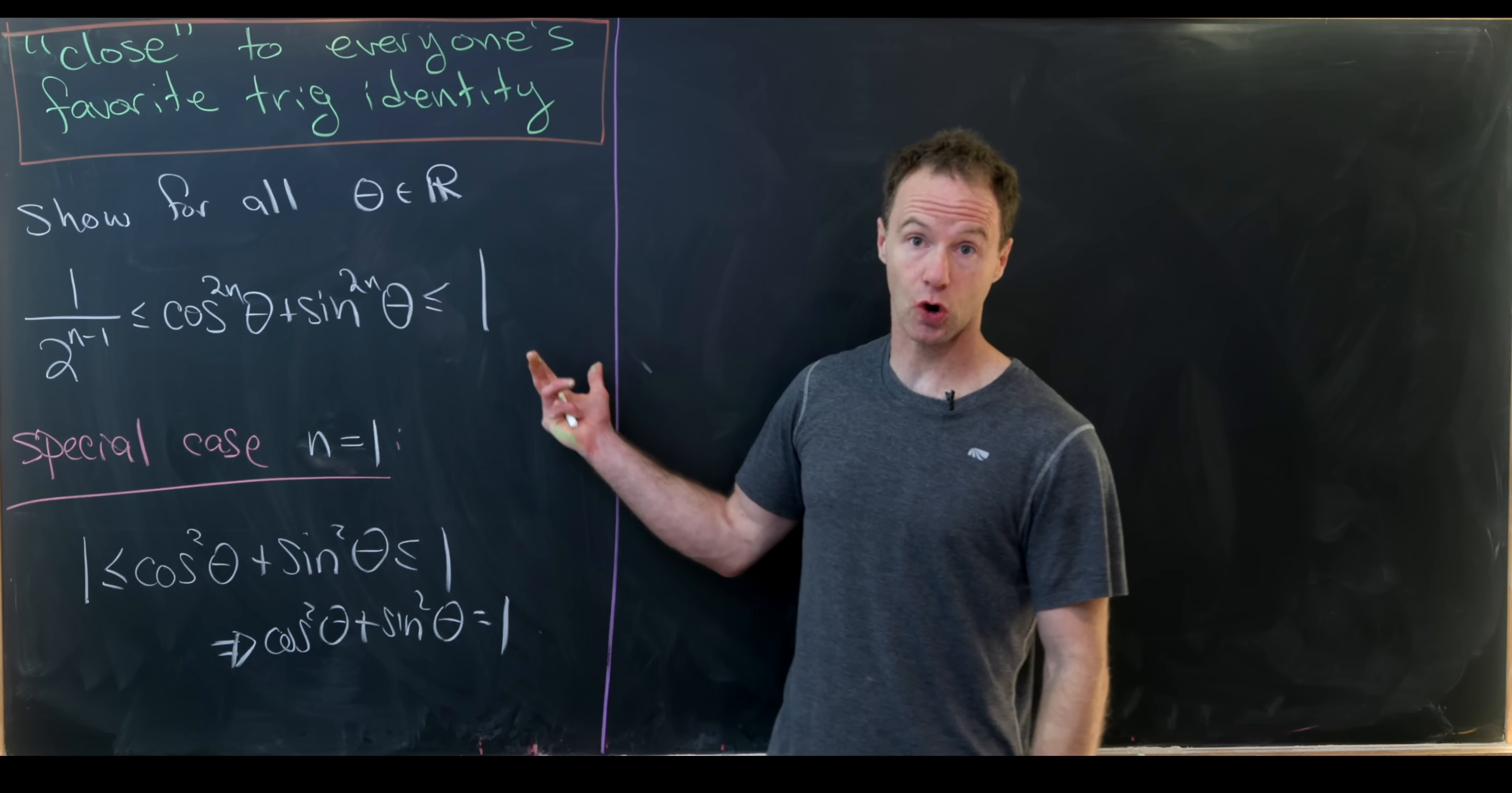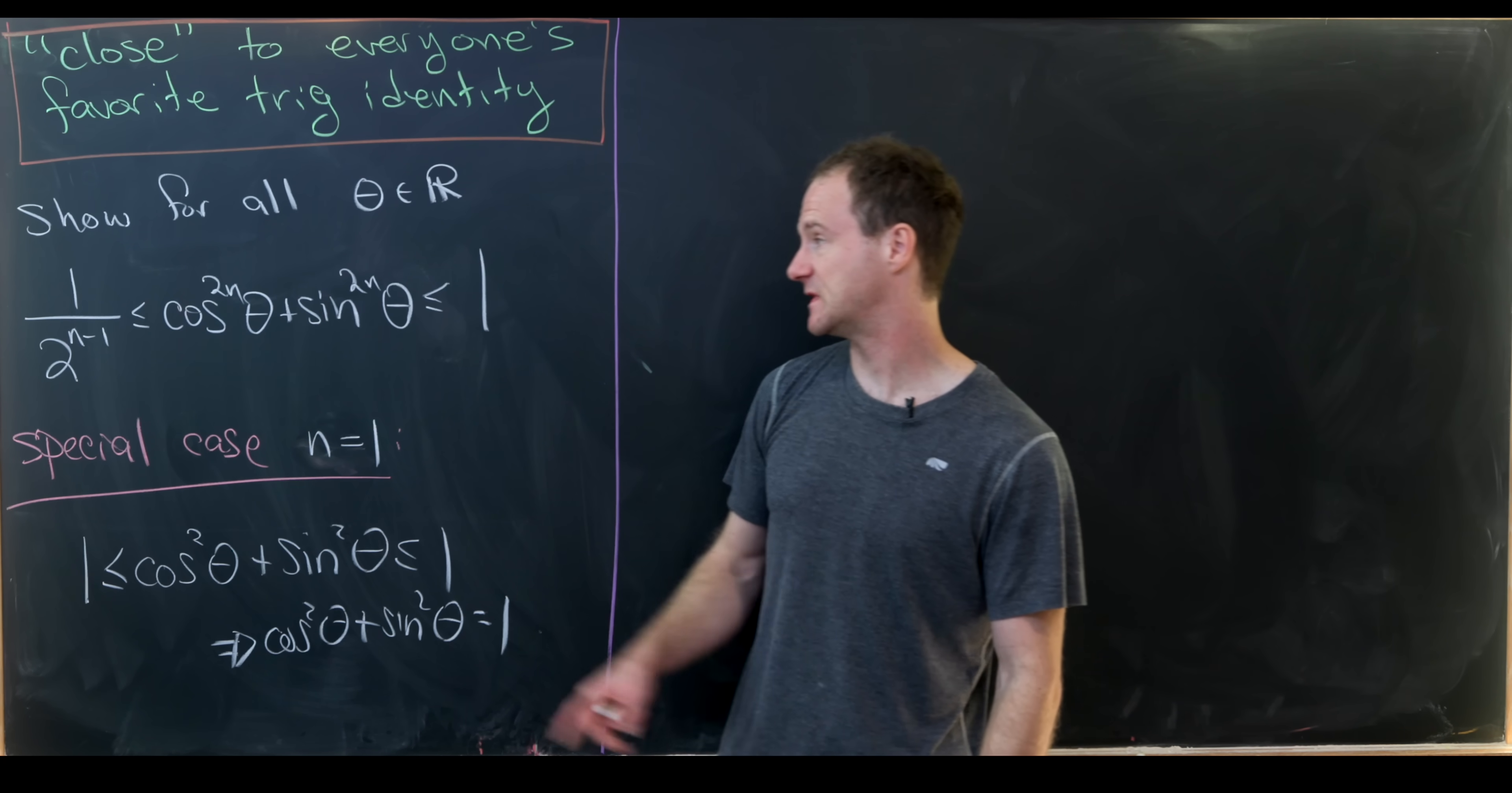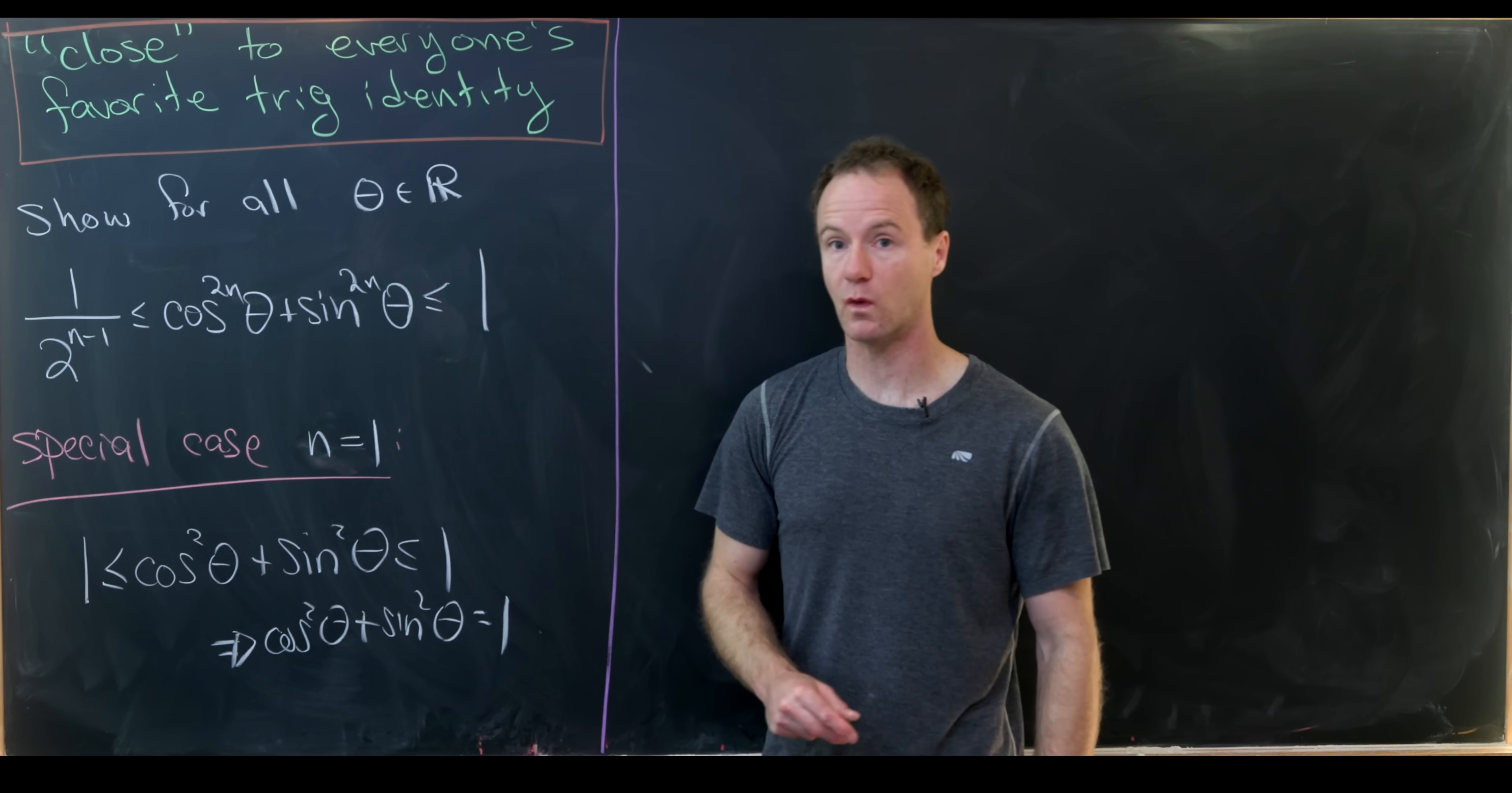And that is the goal of this video, which is to show for all real numbers theta, we have 1 over 2 to the n minus 1 is less than or equal to cosine to the 2n plus sine to the 2n, which is less than or equal to 1.